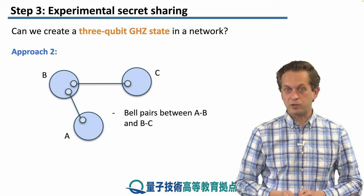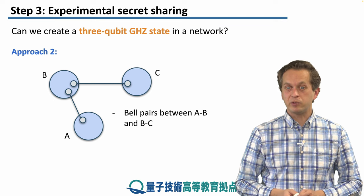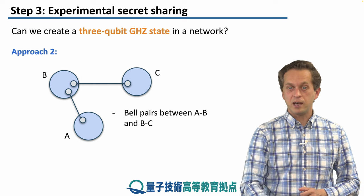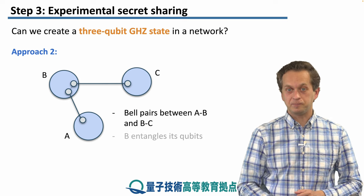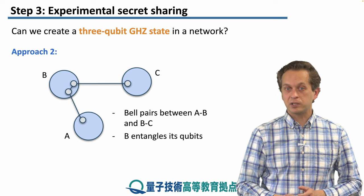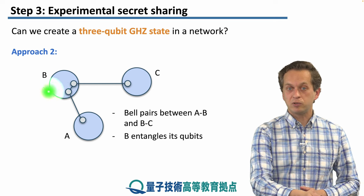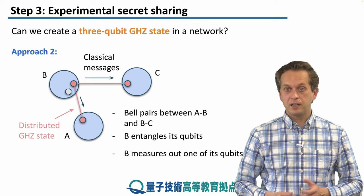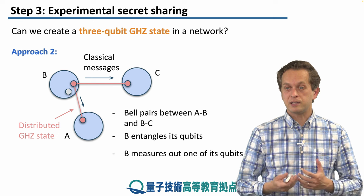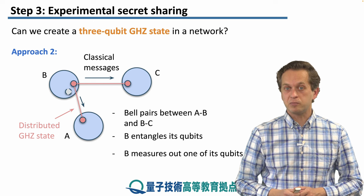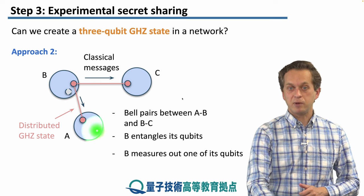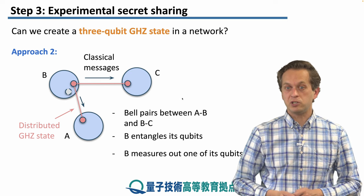In approach two, the starting point is the same: nodes A, B, and C share two bell pairs — A–B and B–C. Then B applies an entangling operation between the qubits sitting in those two quantum memories, and measures out one of the qubits locally. It sends the classical outcome of this measurement to nodes C and A, and this projects the remaining unmeasured qubits into a GHZ state.